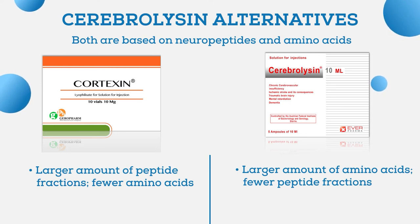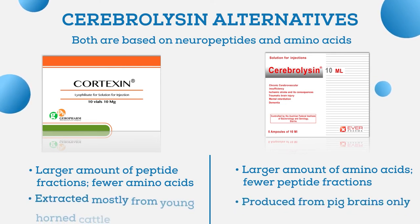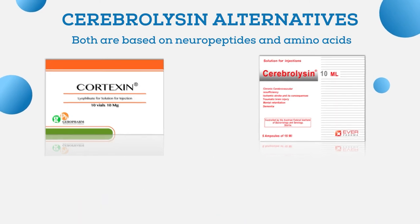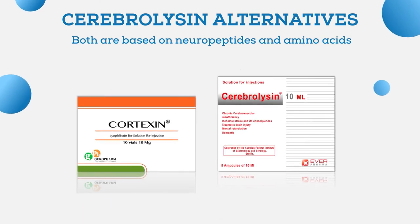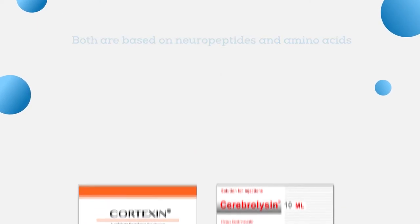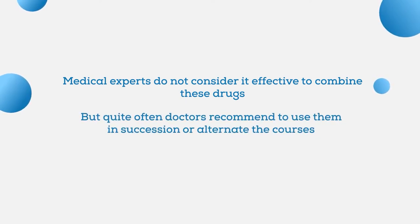Another difference is that Cerebrolysin is produced from pig brains only, while Cortexin is extracted mostly from young horned cattle. You may also wonder if Cortexin and Cerebrolysin can be used together. Medical experts do not consider it effective to combine these drugs, but quite often doctors recommend using them in succession or alternating the courses.